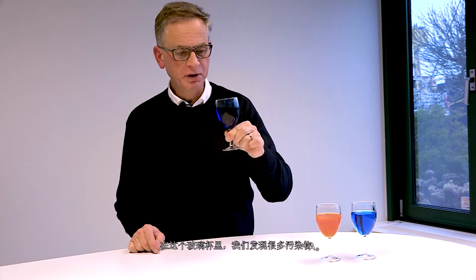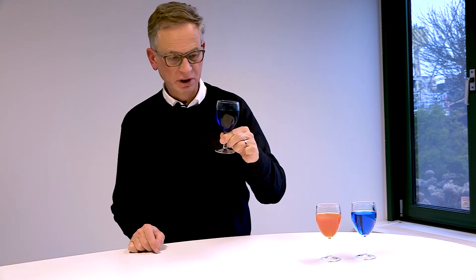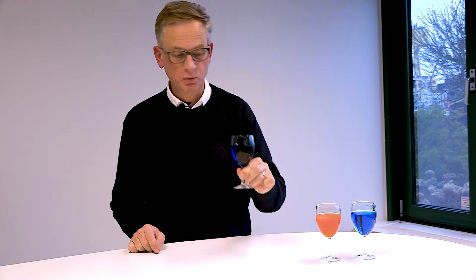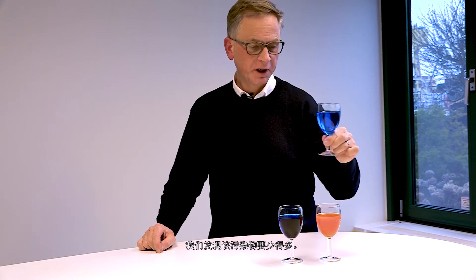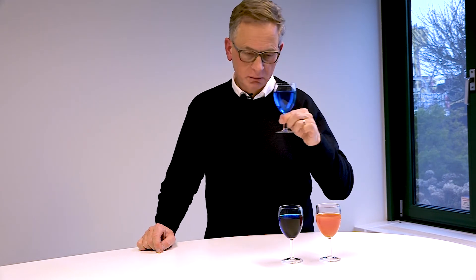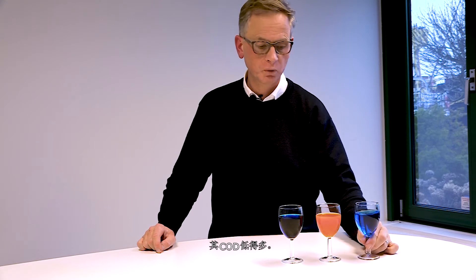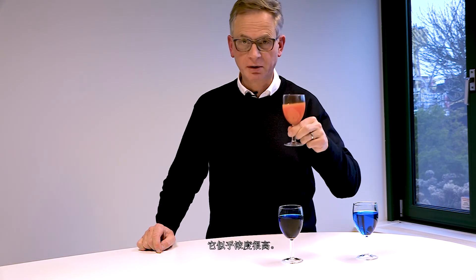In this glass, we find a lot of pollutant A — it seems to have a very high COD. In this glass, we find much less of the same pollutant, so it has a much lower COD. And in this glass, that's a different pollutant altogether — let's call it pollutant B. It seems rather concentrated, so a very high COD too.